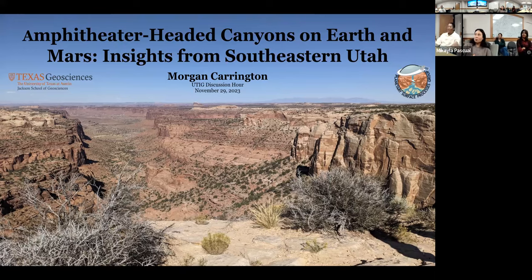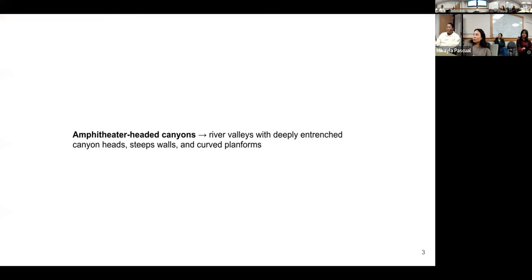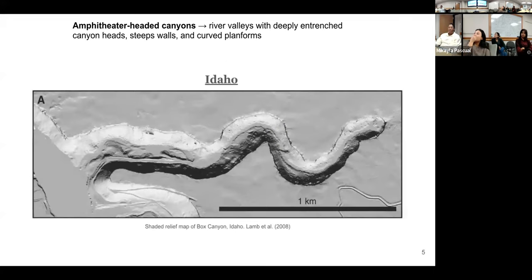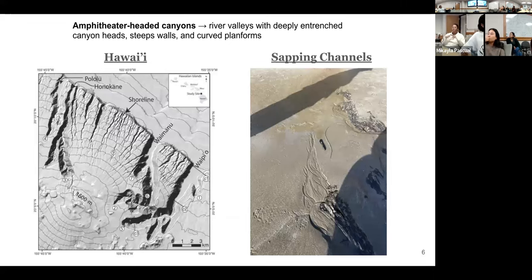It was kind of a reconnaissance trip to figure out how to study these in the field - what we're going to do and how we're going to apply them. Amphitheater canyons are a specific type of canyon, specifically a river valley, with deeply entrenched canyon heads, deep walls, and curved platforms. They occur all over the surface of the Earth, such as in Hawaii - very large versions - and they've been observed in Idaho. This is Fox Canyon. It's really their morphology and plan form, and their association with smaller scale sapping channels.